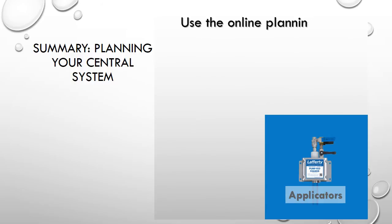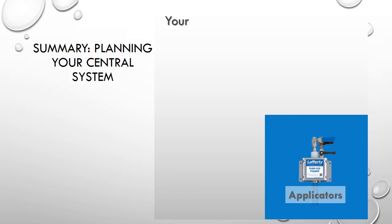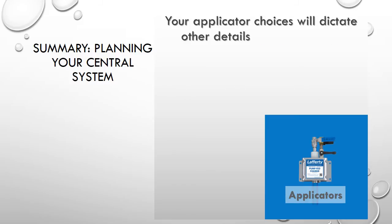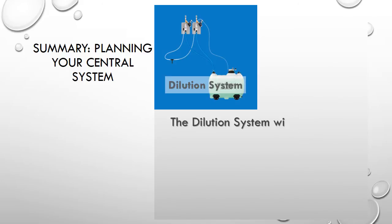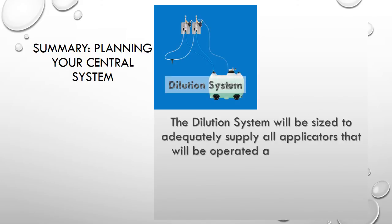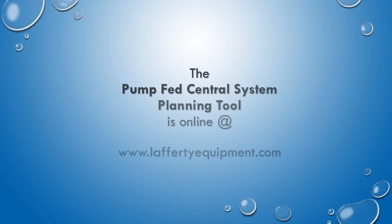To summarize, use the online planning tool. Choose your applicators first — your applicator choices will dictate other details for your system. The dilution system will be sized to adequately supply all applicators that will be operated at the same time. The pump-fed central system planning tool is available online at www.laffertyequipment.com.